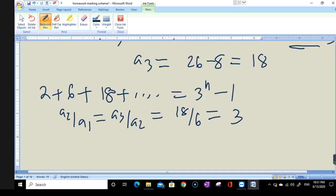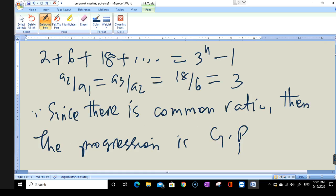Since there is a common ratio, the progression is GP—the progression is a geometric progression. We have shown this already. Thank you.